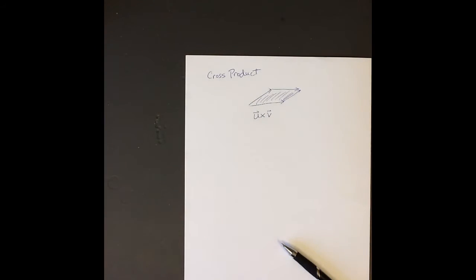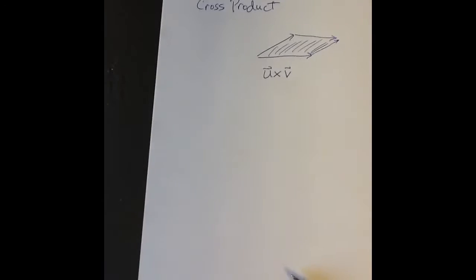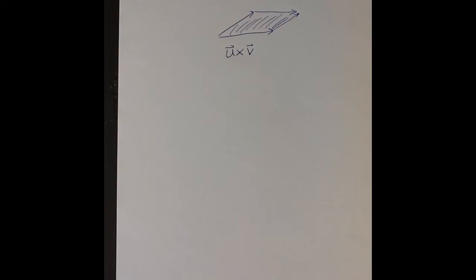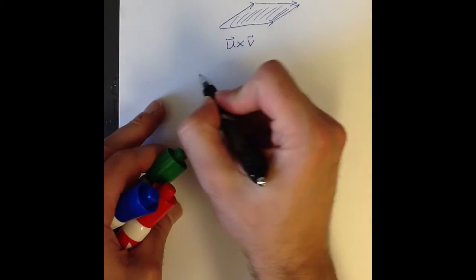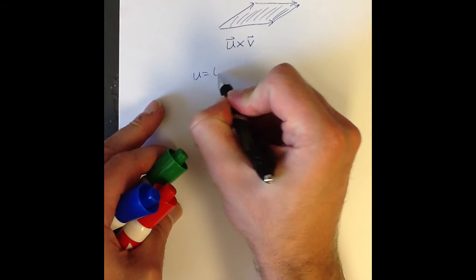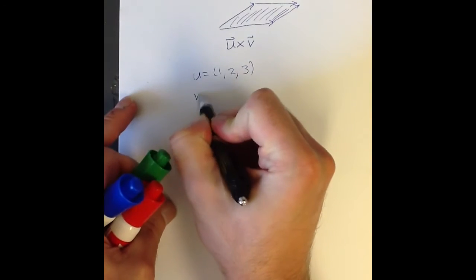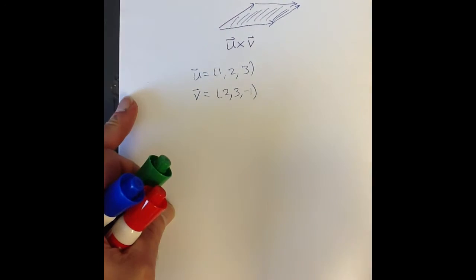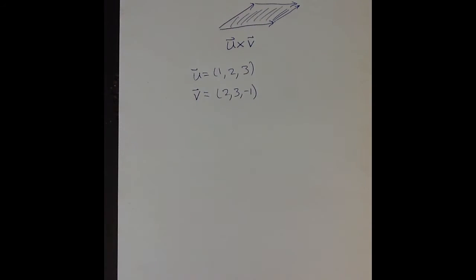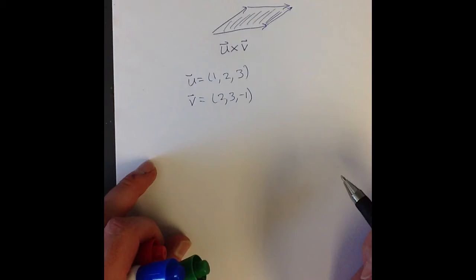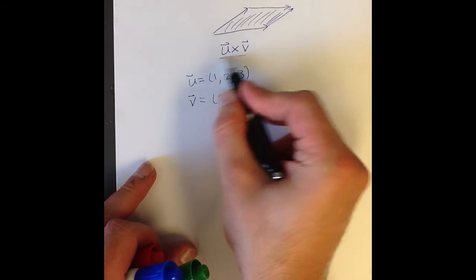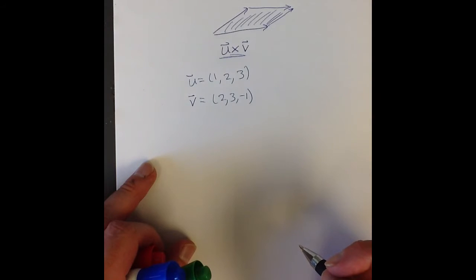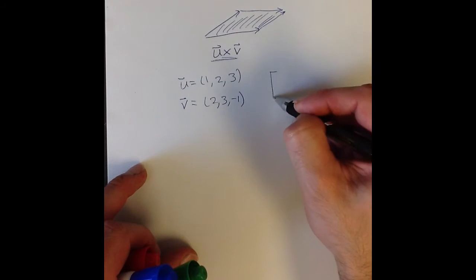So how do we actually compute this vector? Let's do an example with numbers. Let's say our first vector u is the vector (1, 2, 3) and our second vector v is the vector (2, 3, -1). Remember, the cross product formula only works for vectors in three dimensions with three components. What we want to compute is u cross v. An easy way to do this is to set up a 3×3 matrix.